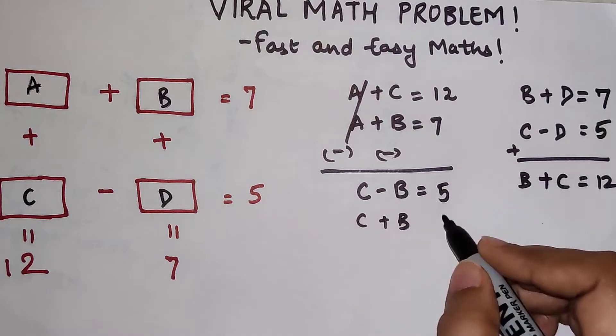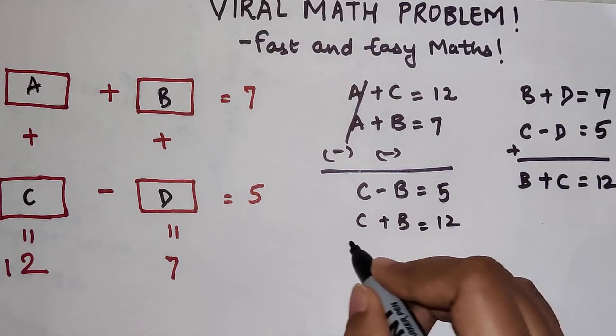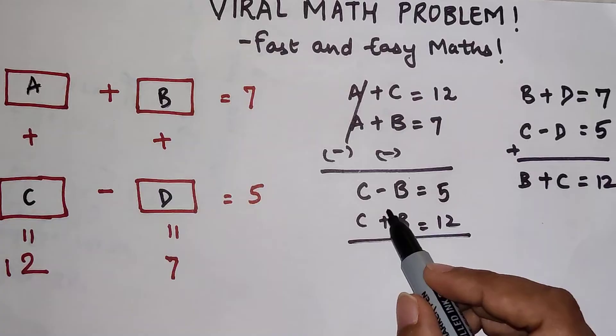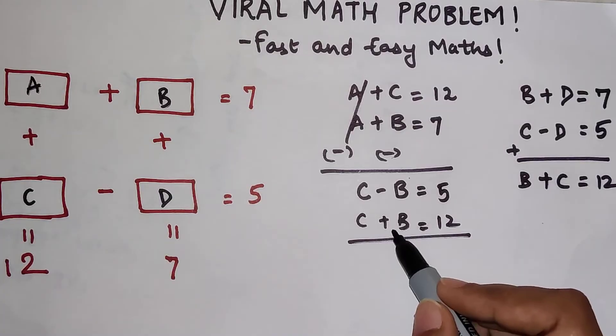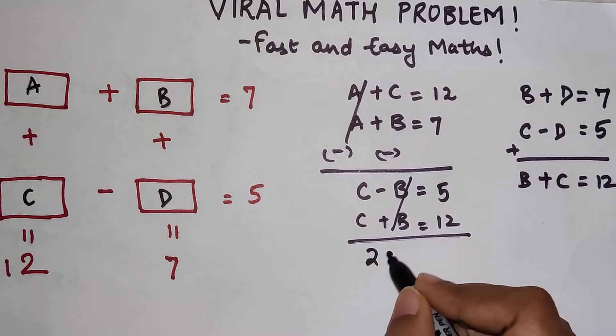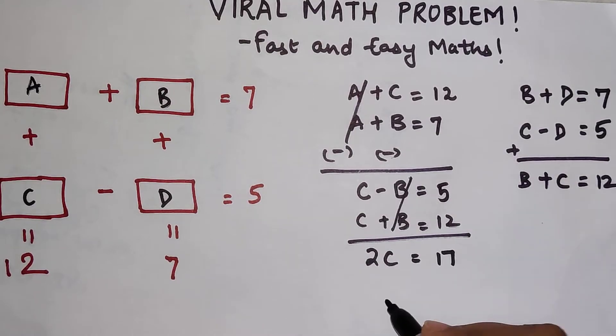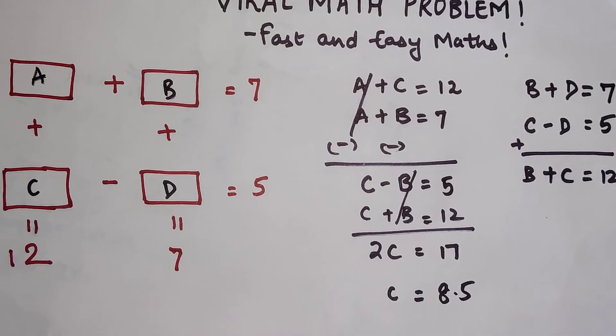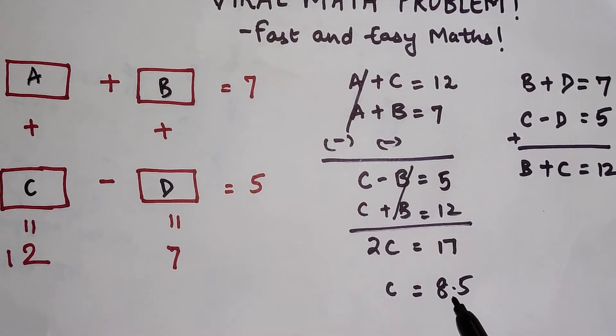So I can interchange the variables. So here what I'm getting is, over here if you look, we have minus B and plus B. I can cancel them by adding the equations, so 2C equals 17. So C equals 8.5, and now you will realize the moment I got my C...